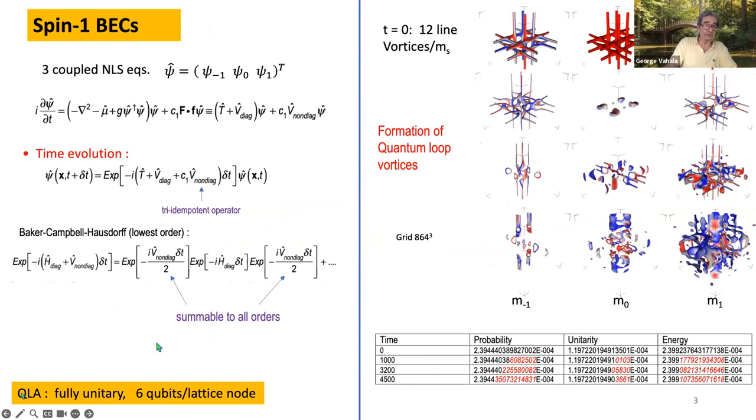The early work we did in quantum turbulence, in particular, we were looking at spin 1 and spin 2 BECs. That's basically three-coupled nonlinear Schrödinger equations. That's the nonlinear Schrödinger equation right here. Psi is a spinor, and this is the interaction, the spin interaction term.